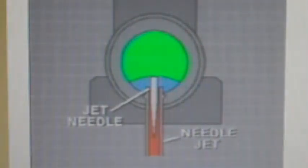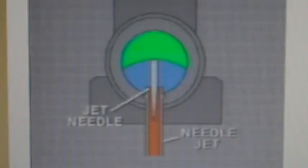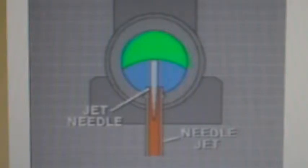Once the throttle valve is opened past one-quarter, the low-speed system becomes less functional and the main metering system gradually takes over. The main metering system has three components: the jet needle, the needle jet, and the main jet. The jet needle has straight and tapered sections and moves up and down with the throttle valve, changing the needle jet fuel flow area to match the airflow. From idle to about one-quarter throttle, the valve is low in the throat and the straight section of the needle restricts fuel flow through the needle jet. As the throttle opens from one-quarter to one-half, the needle rises farther in the needle jet — the tapered section is now exposed and the effective area of the needle jet increases, so additional fuel can come through.